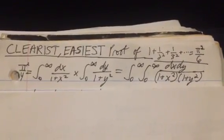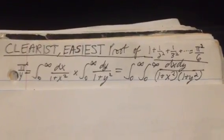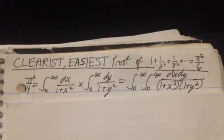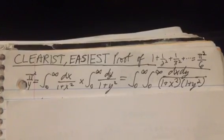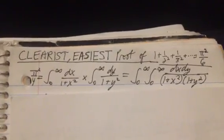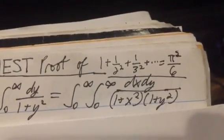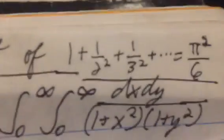Hey everybody, this is Marshall here, and I wanted to show you a math derivation. Just like the title says, I think it's the clearest, easiest proof that this sum over here is equal to the thing on the left is equal to the thing on the right.